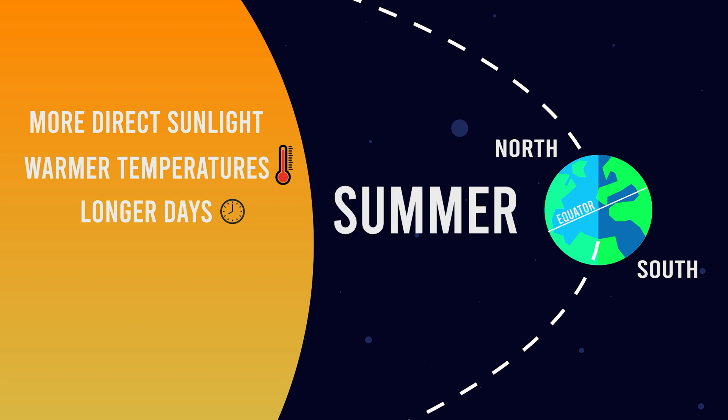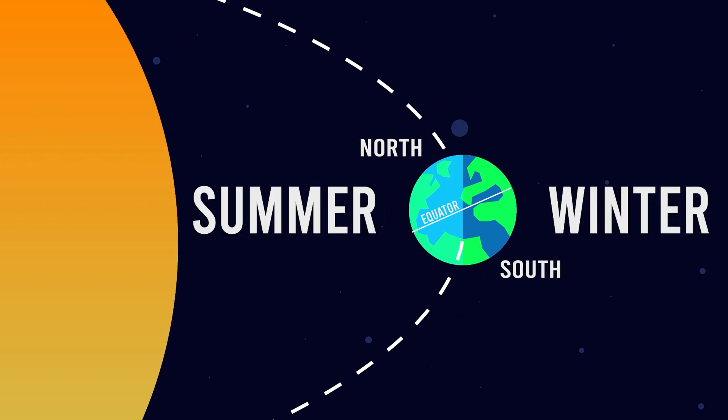At the same time, the southern hemisphere is tilted away from the Sun, receiving less direct sunlight, leading to cooler temperatures and shorter days. This is winter for the southern hemisphere.